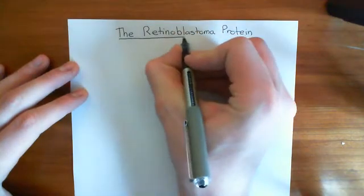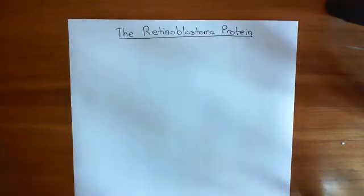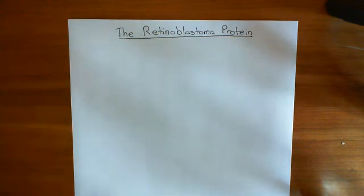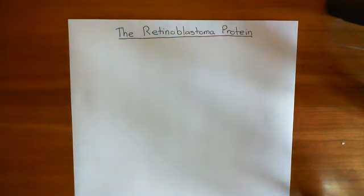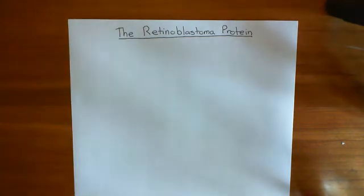The outline for this video is: first, we're going to look at the cell cycle and the different phases. Then we'll look at the importance of the retinoblastoma protein in controlling the cell cycle. Finally, we'll look at how this can go wrong in hereditary and non-hereditary retinoblastoma, and how mutations in this protein lead to cancer.